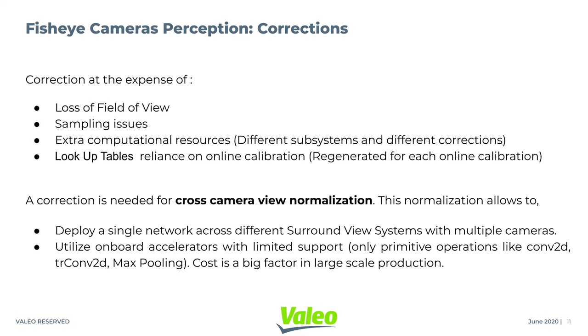In spite of these disadvantages, we go for correction because it offers cross-camera view normalization. This normalization allows us to deploy a single network across different surround view systems with multiple cameras.